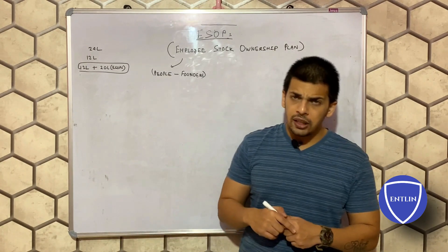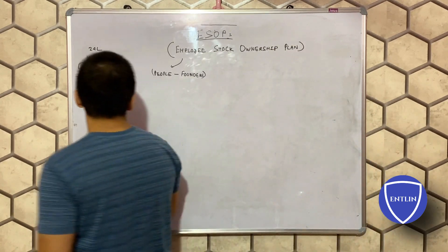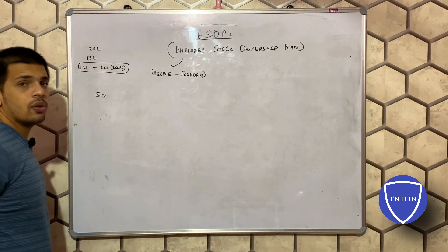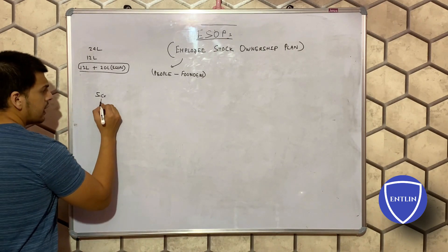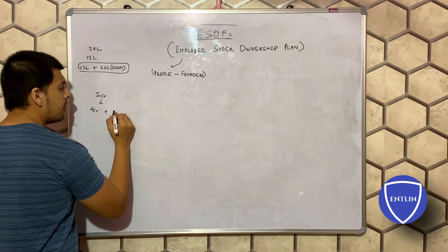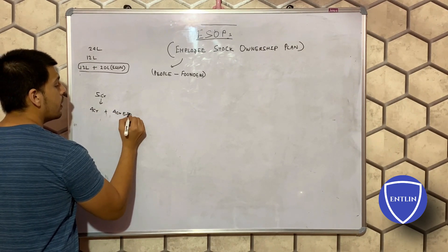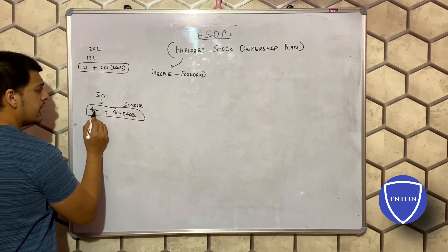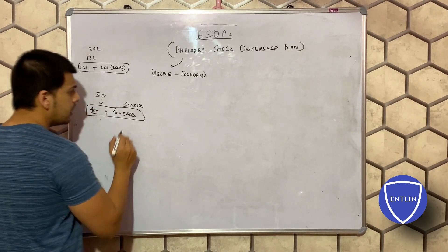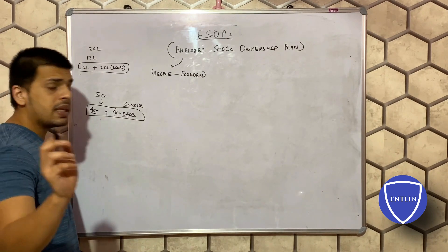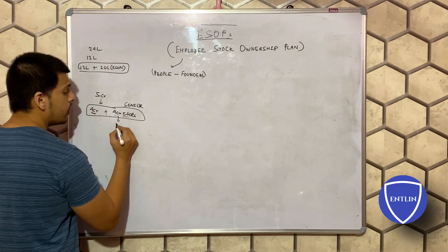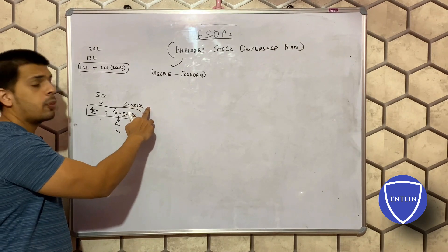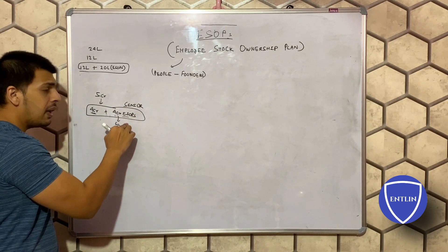Say a senior person is coming at a yearly package of five crores. Instead of providing all five crores as cash, the company can provide four crores as a cash package plus another four crores as ESOPs. This senior employee gets a decent cash salary plus company shares worth four crores. As the company's value increases, those shares might become six or seven crores, so this person will be more interested in the company's progress.